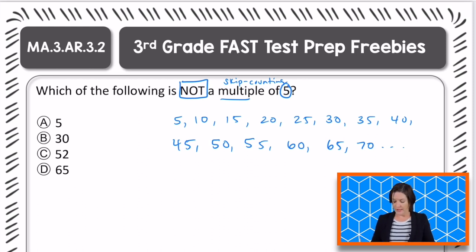So looking, which of the following is not a multiple of five? Well, five is a multiple. So should we keep five or eliminate it? Eliminate it, because we're looking for the one that is not. It's right here.